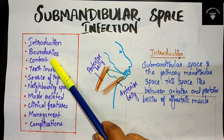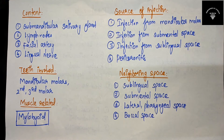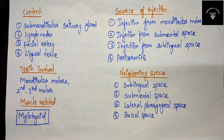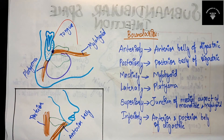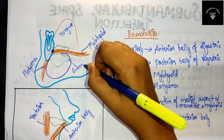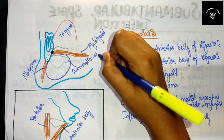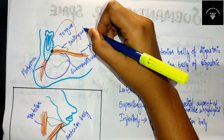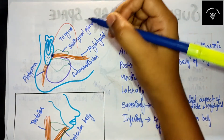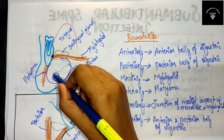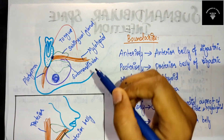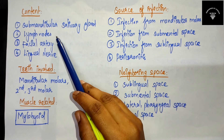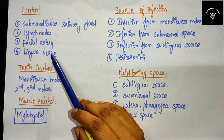Now let's move on to the contents of the submandibular space. The contents include the submandibular salivary gland, lymph nodes, facial artery, and the lingual nerve.